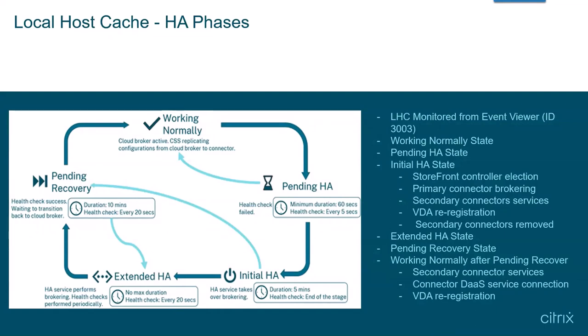This will force the VDAs to trigger a re-registration so they will register with the primary connector for the resource location. It is possible to see launch failures during this phase as the VDAs re-register with the primary connector. They will show an unregistered power state unknown in WebStudio. Storefront will detect the XML services are down on the secondary connectors, remove them from the list of available delivery controllers, and begin sending XML requests to the primary connector. Connectors stay in the initial HA state for five minutes, with health checks only at the end of this stage, allowing VDA re-registrations to complete and for the resource location to become stable.